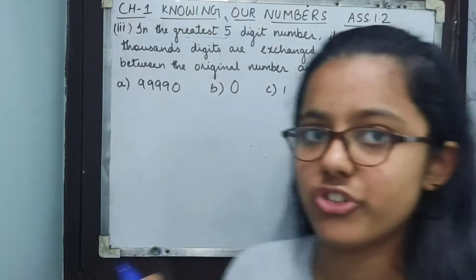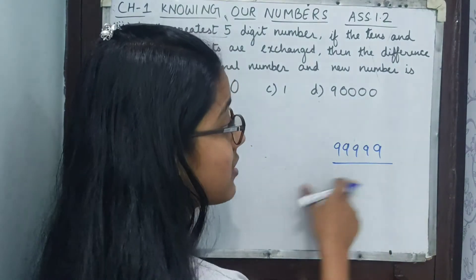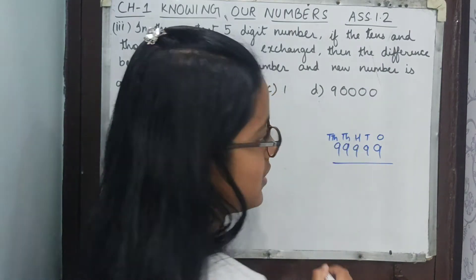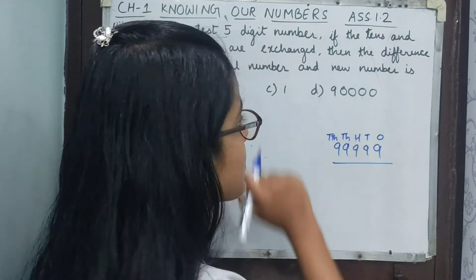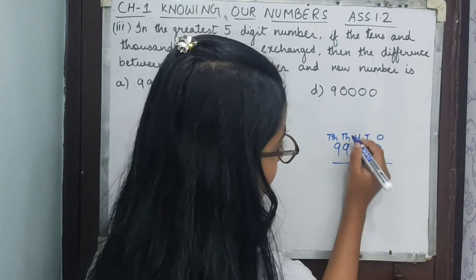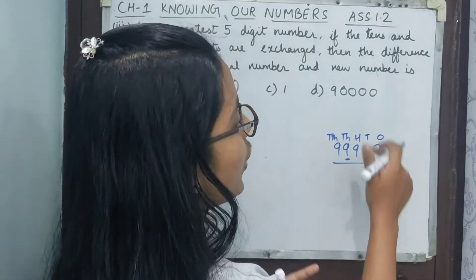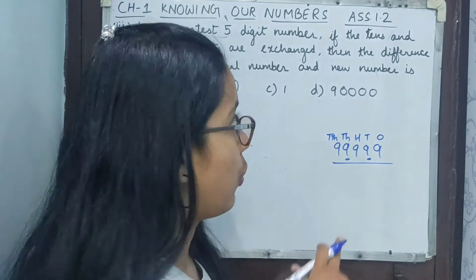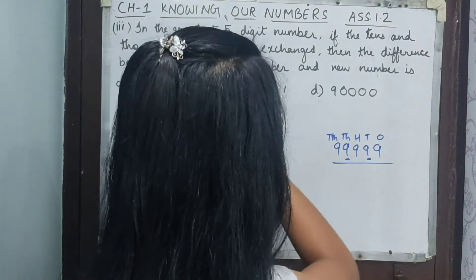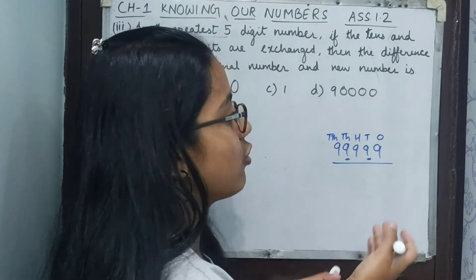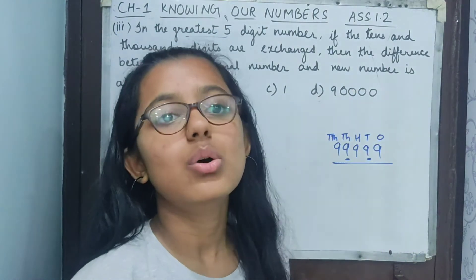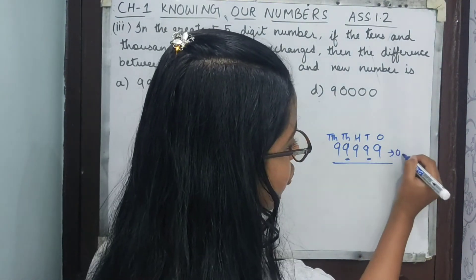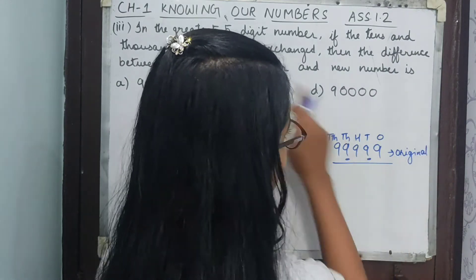Let's write the place values: ones, tens, hundreds, thousands, ten-thousands. If the tens and thousands digits are exchanged — the tens digit goes to the thousands place and the thousands digit goes to the tens place — we need to find the difference between the original number and this new number.